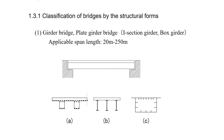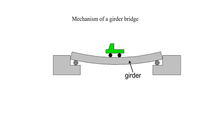Next, let us classify bridges by structural forms. First, girder bridges. Steel girder bridges with an I-section or box section are called plate girder bridges. The applicable span length is 20 to 250 meters. Cross-section A is used for RC girders, B is the plate girder with I-section, and C is the steel box girder. The girder is supported at both ends. When vehicles run on the bridge, the girder deflects and resists bending moments and shear forces caused by the vehicles. The girder is designed not to break nor deflect too much.